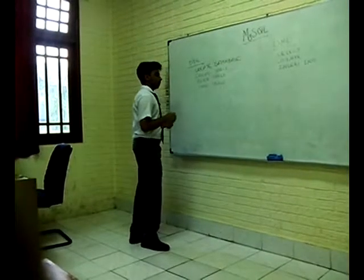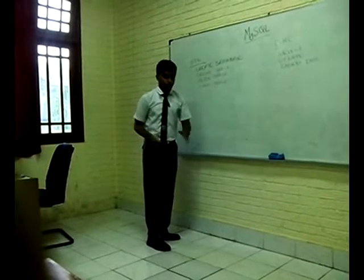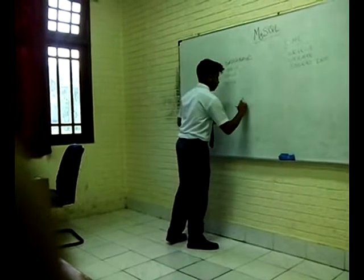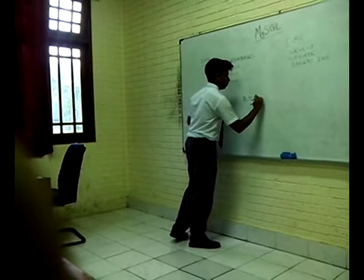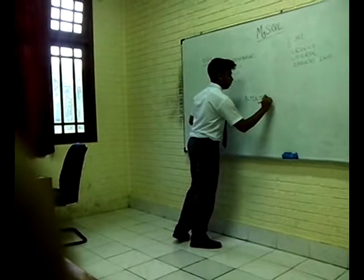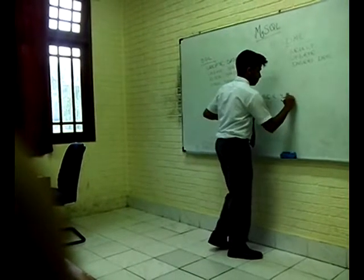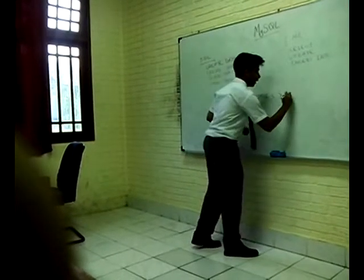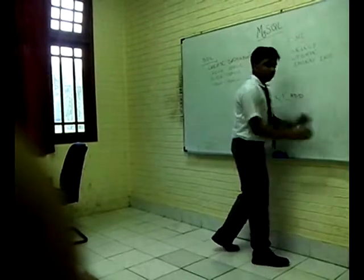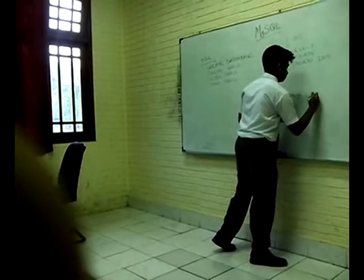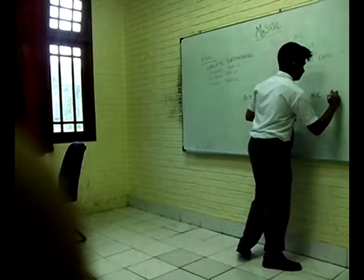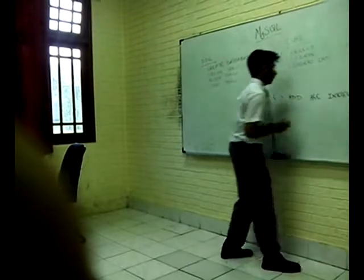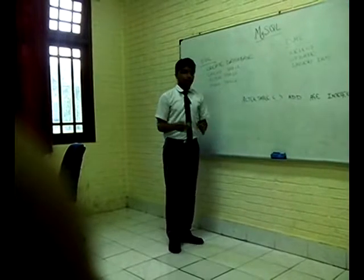Next is ALTER TABLE. Like we created a table with two columns — now I am going to add a third column using ALTER TABLE. The syntax is: ALTER TABLE, then the table name, then ADD, followed by the column name you want to add, like 'age' with integer, and then close it. This will add another column to whichever table you specify.